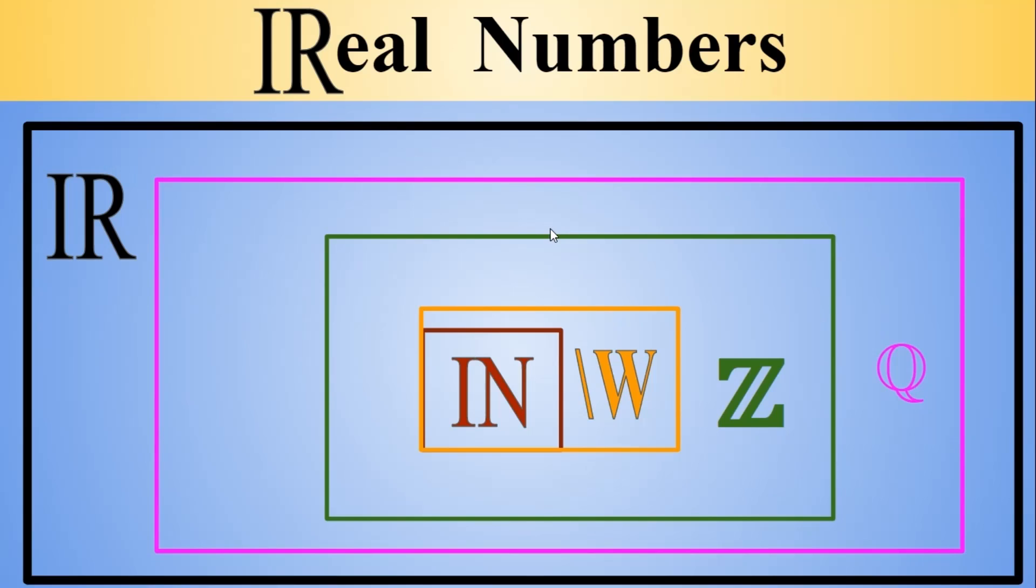So for example what is a whole number that is not natural? What's some number that lives in the second layer? Well zero. What's an integer that is not a whole? So over here we have minus three, minus two, these are different layers where different numbers live.